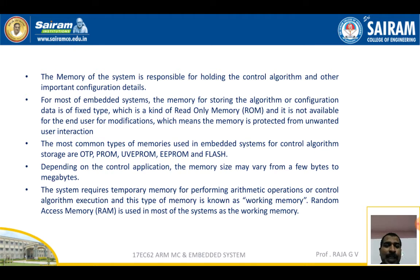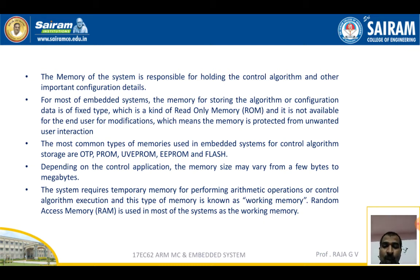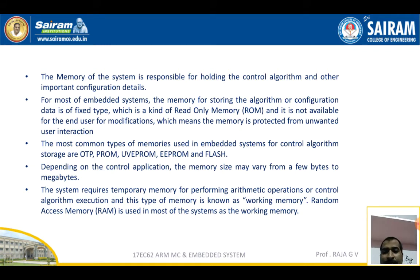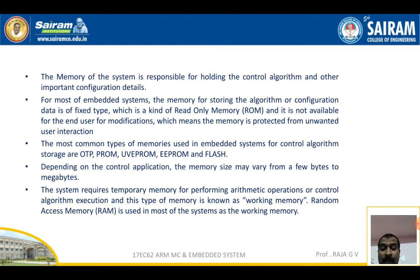Memory of the system holds control algorithms and important configuration details. For most embedded systems, the memory storing the algorithm or configuration data is fixed type — ROM, read-only memory — not available for end user modification. Types of memory used include one-time programmable OTP, PROM, UVEPROM, EEPROM, and flash memories. Flash memory allows content to be erased using EEPROM technique and stored like PROM. Memory size may vary from a few bytes to megabytes. Temporary memory for arithmetic operations and control algorithm execution is called working memory.